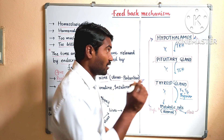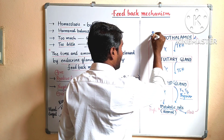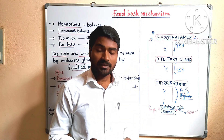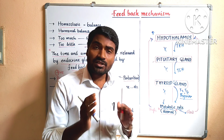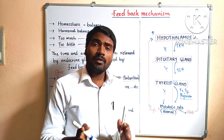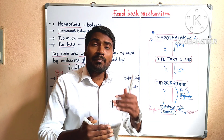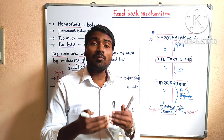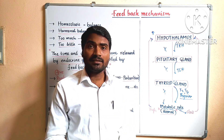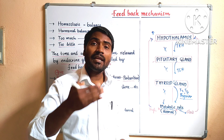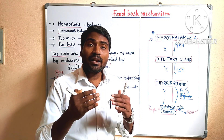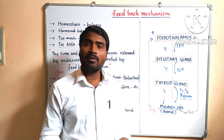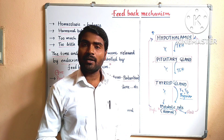The part of the brain mainly involved in this feedback mechanism is the hypothalamus. The nervous system and endocrine system together maintain the balance of hormones. Such maintaining of hormonal balance or regulation of hormonal activity is nothing but feedback mechanism.